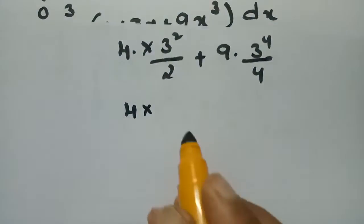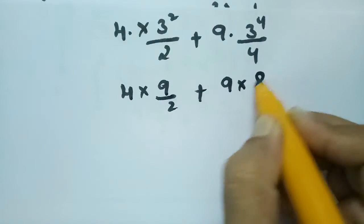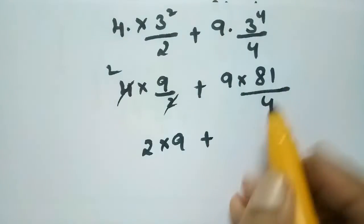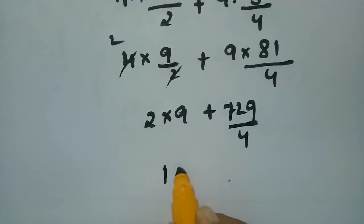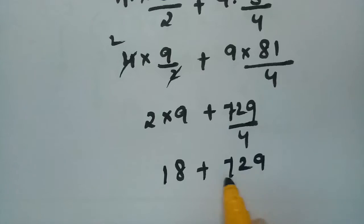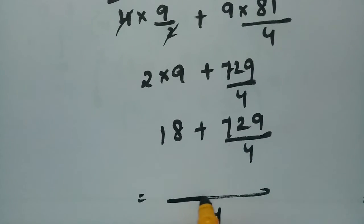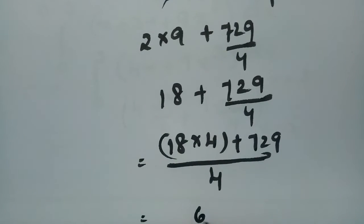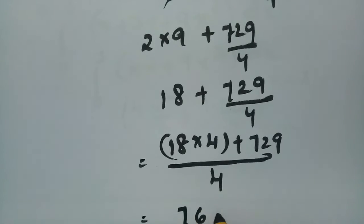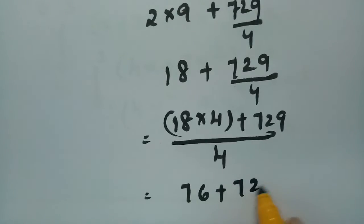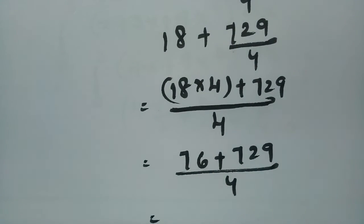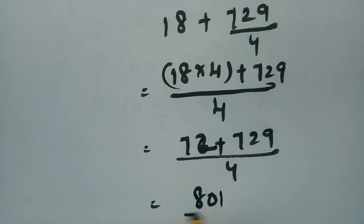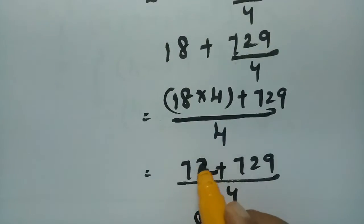This gives 4 × 9/2 plus 9 × 81/4, which is 18 plus 729/4. Taking 4 as LCM: (18 × 4 + 729)/4 = (72 + 729)/4 = 801/4.